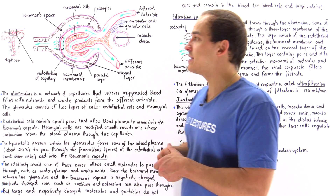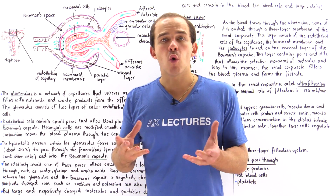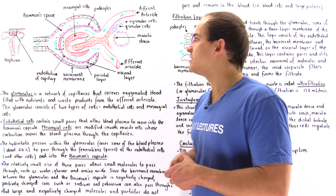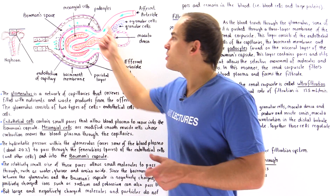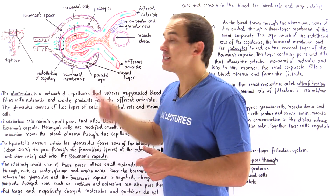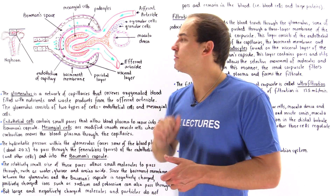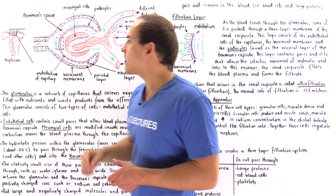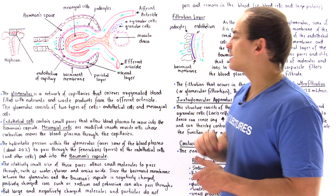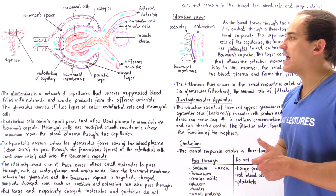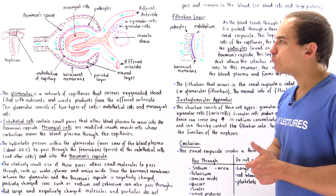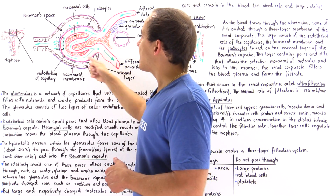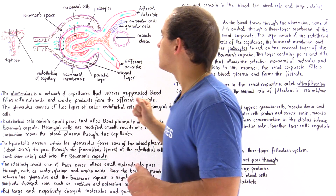Remember, the nephron contains a portal system — two capillary networks. The glomerulus is the first capillary network and the vasa recta is the second capillary network. So let's take a look at our glomerulus.